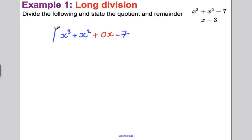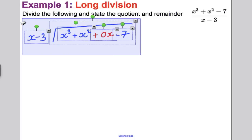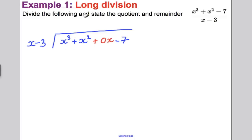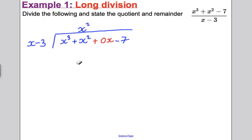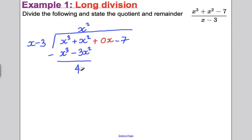We are taking that expression and dividing it by x − 3. What do we need here to multiply by this to get an x³ term? We need an x². So we write x² in the x² column and multiply it by the whole expression — we get x³ − 3x². Put a line underneath and subtract the two expressions. x³ minus x³ is nothing. x² subtract −3x² is actually 4x².